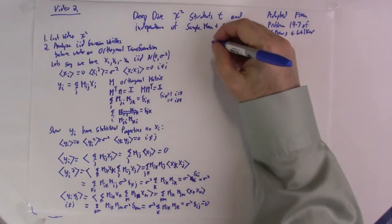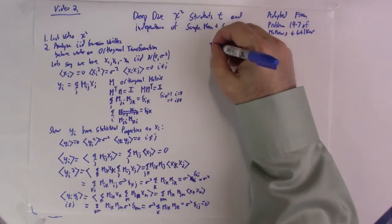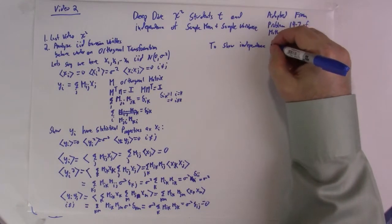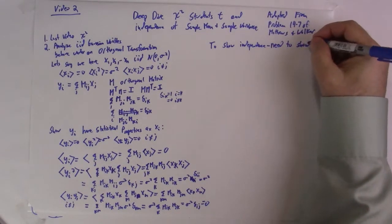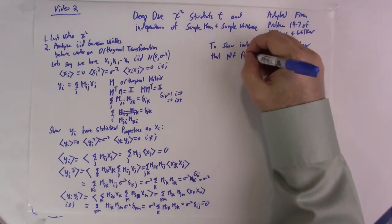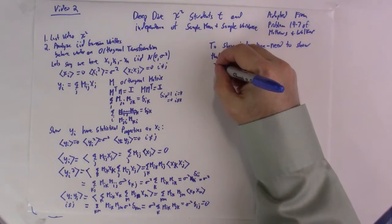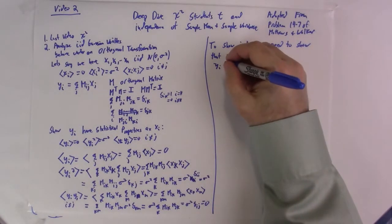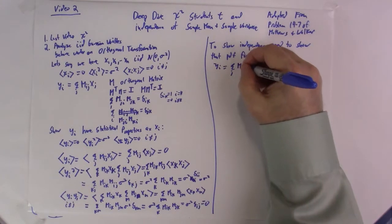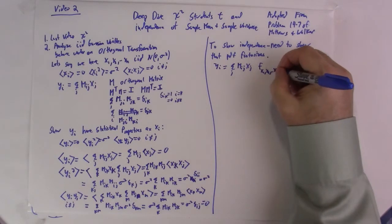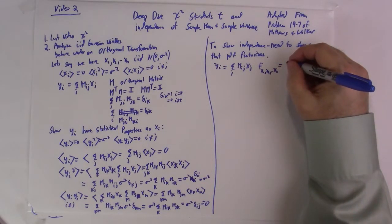I'm going to show that this implies independence. We've stated many times in class that for Gaussian variables, if the correlations vanish then they're independent — but we've never really proven it, so I'll give a brief outline proof. To show independence, we need to show that the PDF for all the variables factorizes — that's the definition of independence. We're given that yi equals the sum over j of M_ij times xj, and the joint PDF f(x1, x2, ..., xn) is just a product of Gaussians because the x's are independent.